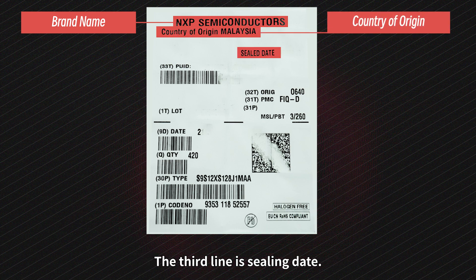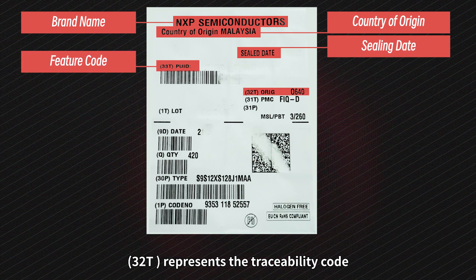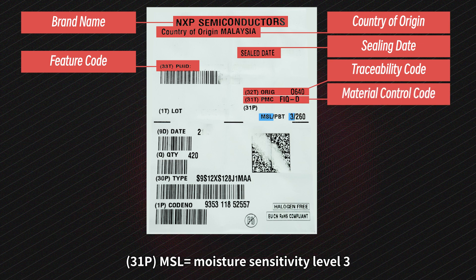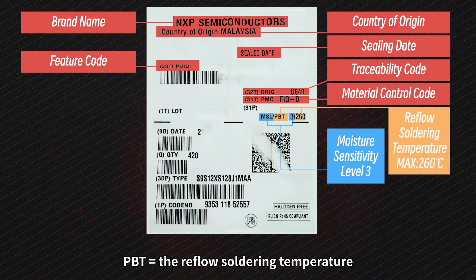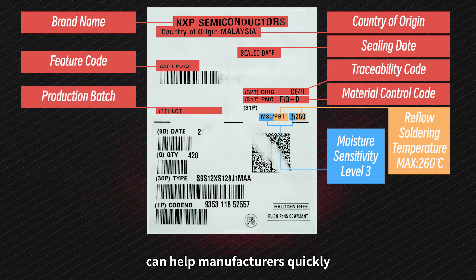The second line is the country of origin. The third line is the selling date. The next line represents the feature code: 32T represents the traceability code, 31T represents the material control code, 31P is the MSL (moisture sensitivity level) 3, and PPT — the reflow solder temperature cannot exceed 260 degrees.